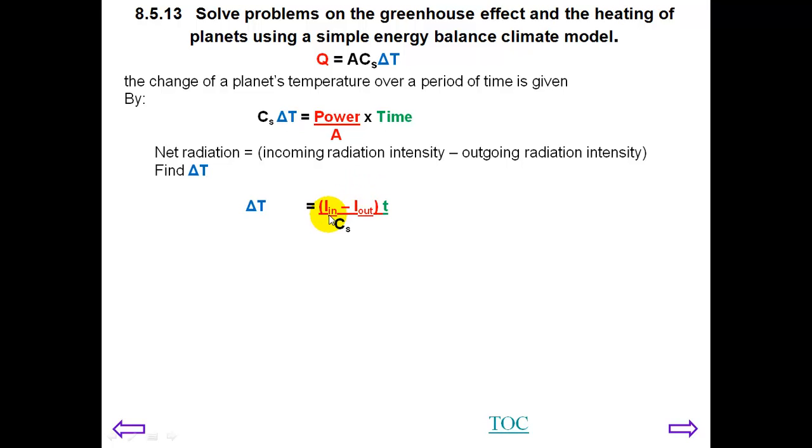We're looking at the net radiation. Power over A is the intensity. We look at the intensity of the radiation which goes into the substance and subtract the intensity of the radiation that is emitted from the substance. This difference will give you an idea of calculating the change in temperature.